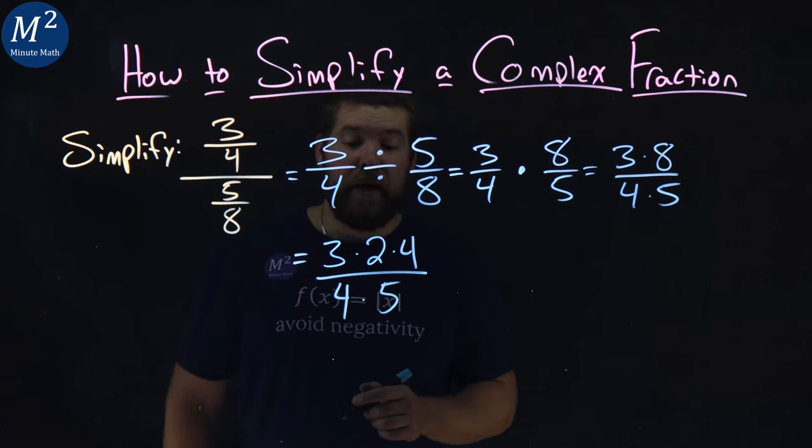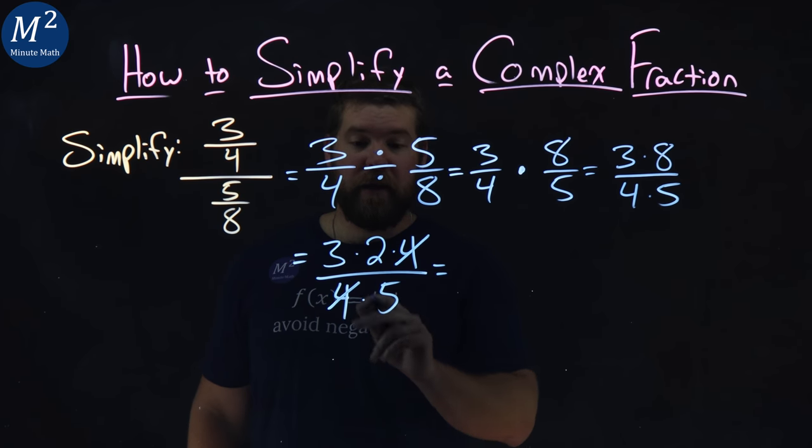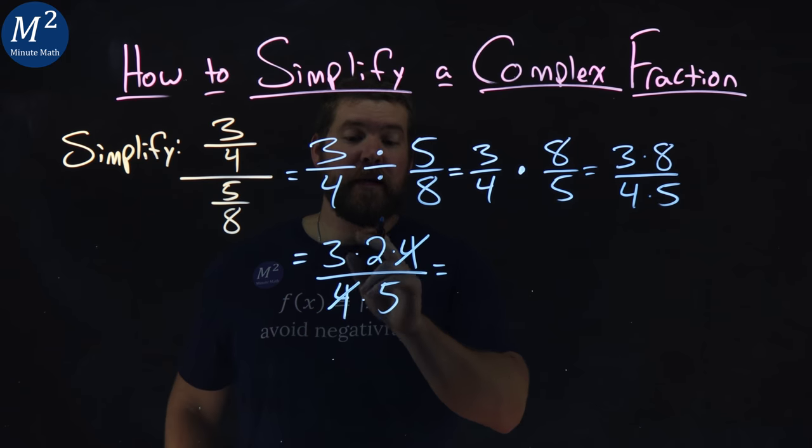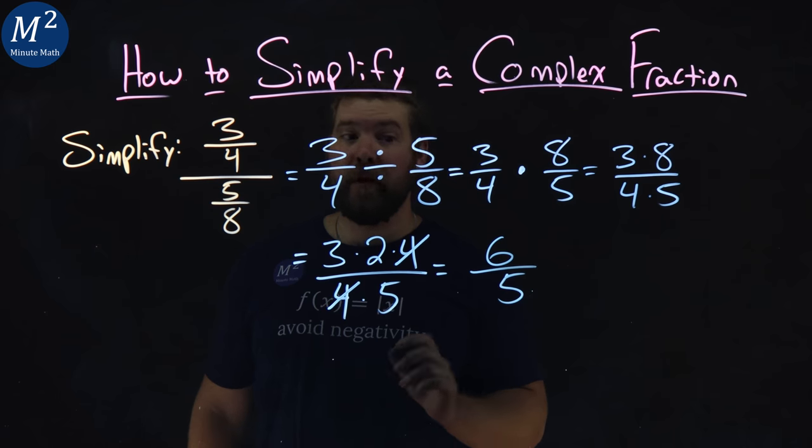Now let's cancel out where we can. This four cancels and this four cancels. Anything else cancel? No. Left with three times two as six over five in the denominator, and there we go.